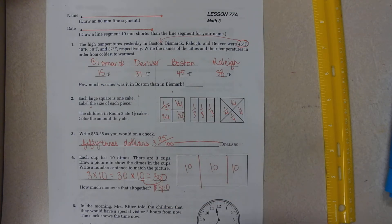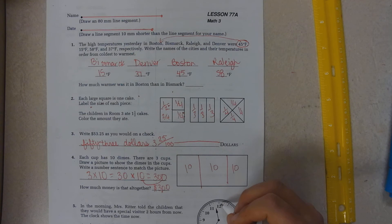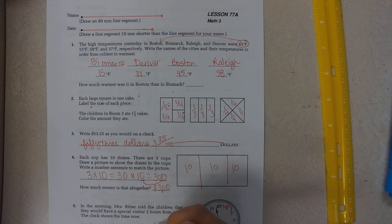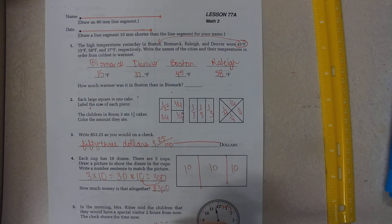In the morning, Miss Rita Ritter told the children that they would have a special visitor two hours from now. And now, the clock shows the time. Well, it's eleven. So two hours from that would be twelve. One. And I need to know my minute hand. So this is thirty and five. Thirty five.